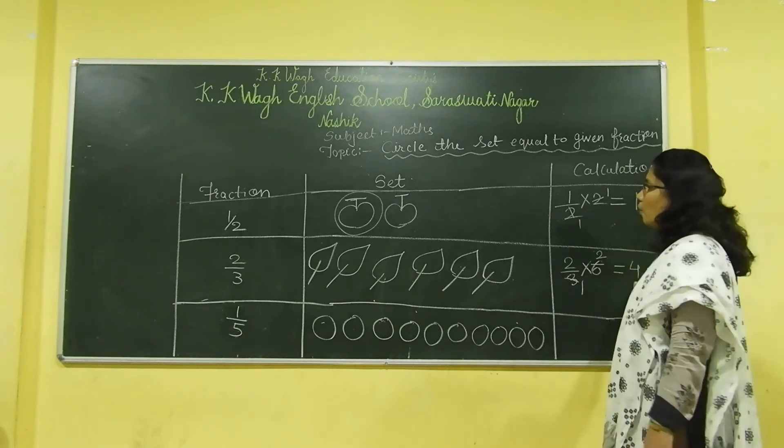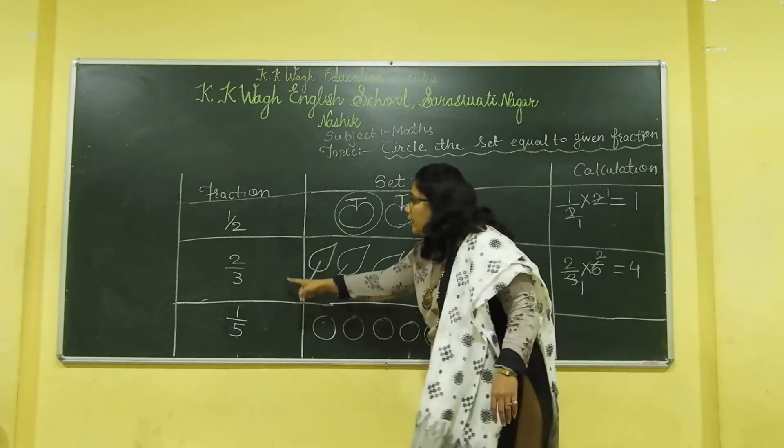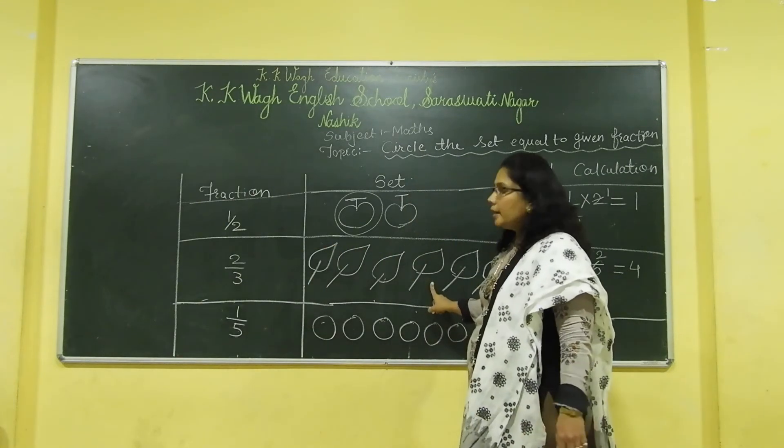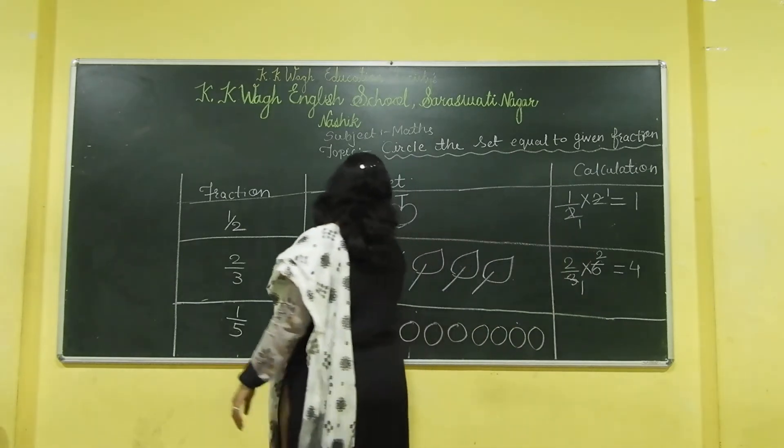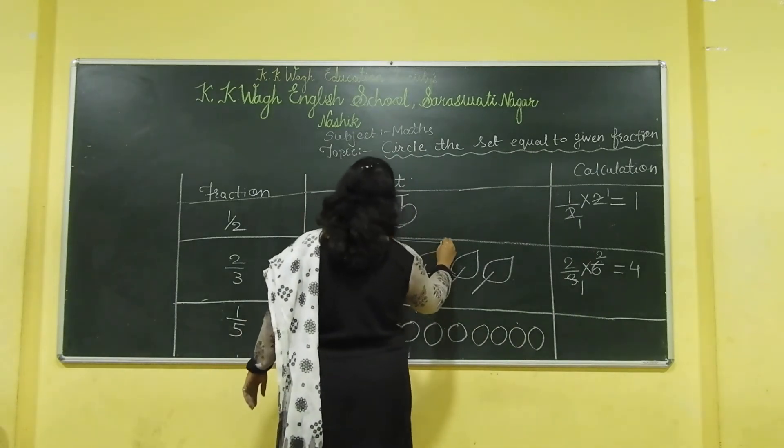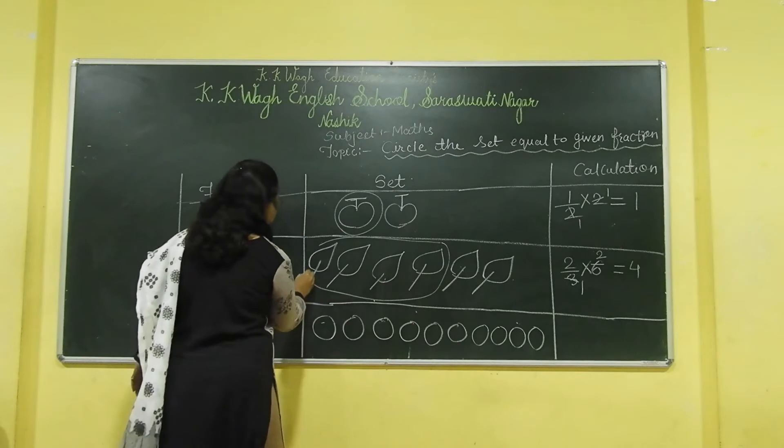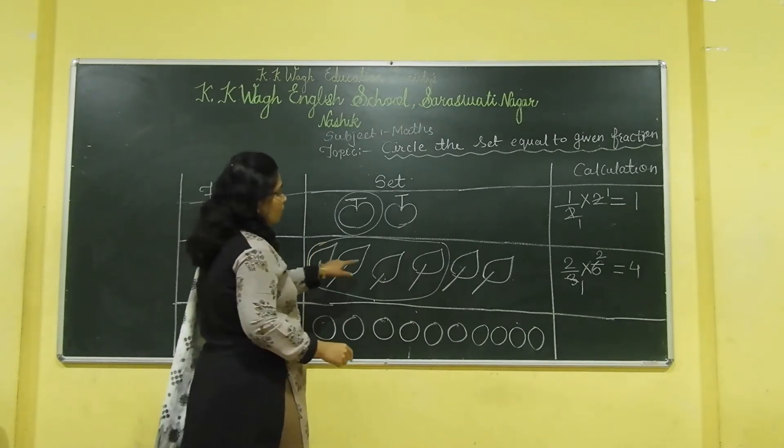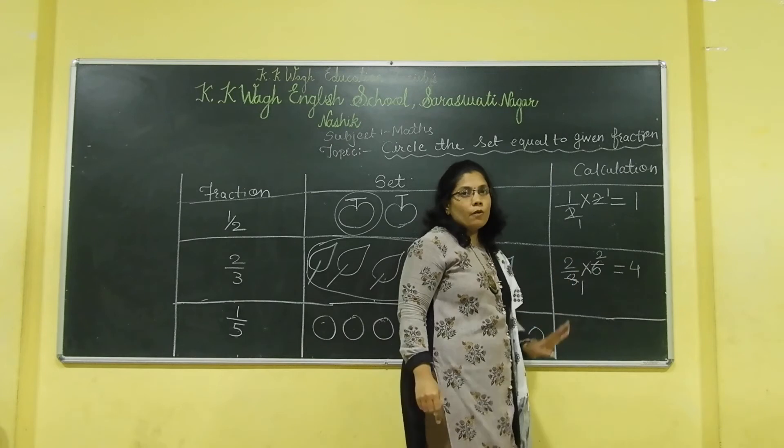So, the fraction of 2 by 3. How we will show here? By circling the 4 leaves. I have circled the 4 leaves here. 1, 2, 3 and 4. Because we have got the answer 4.